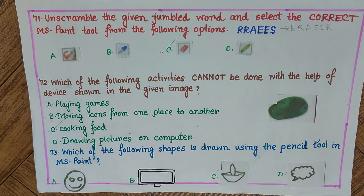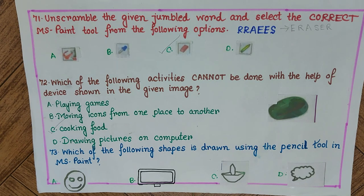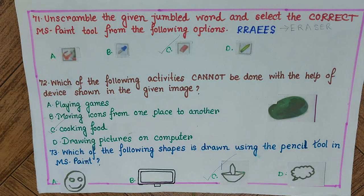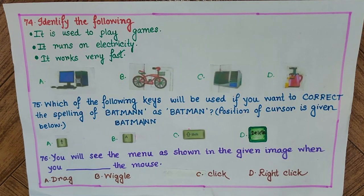Question 73: Which of the following shapes is drawn using the pencil tool in MS Paint? A) a smiley, B) a rectangular object, C) a freehand drawing, D) a cloud picture. The answer is C.